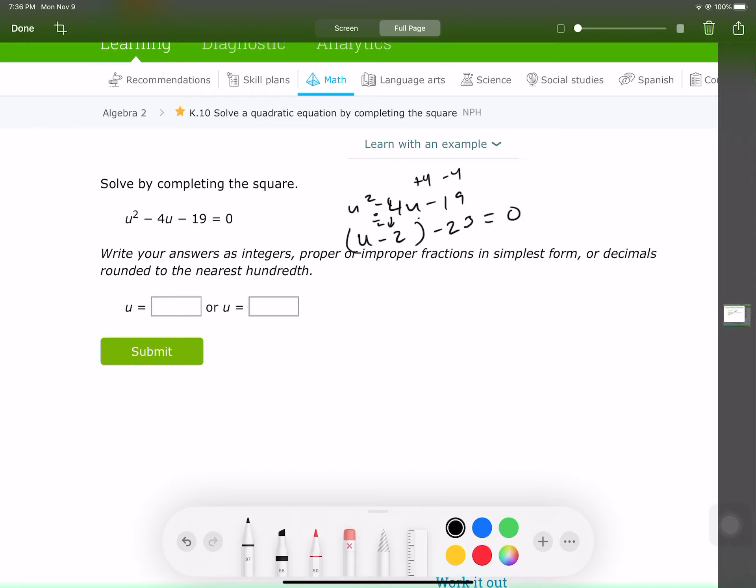Equals 0 squared. Okay, we got a perfect square there. Again, just double check. This is u squared minus 4u plus 4 minus 23. Gives us back to the 19 we started with.